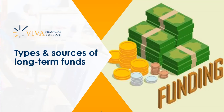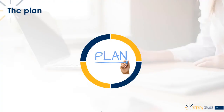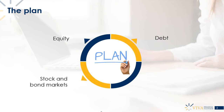This is the first of two chapters on long-term finance. This one covers types and sources of long-term funds. The plan is to look at equity finance, debt finance — the two classic ways of obtaining finance from a company's point of view — and then a quick look at the stock and bond markets and the role of advisors.